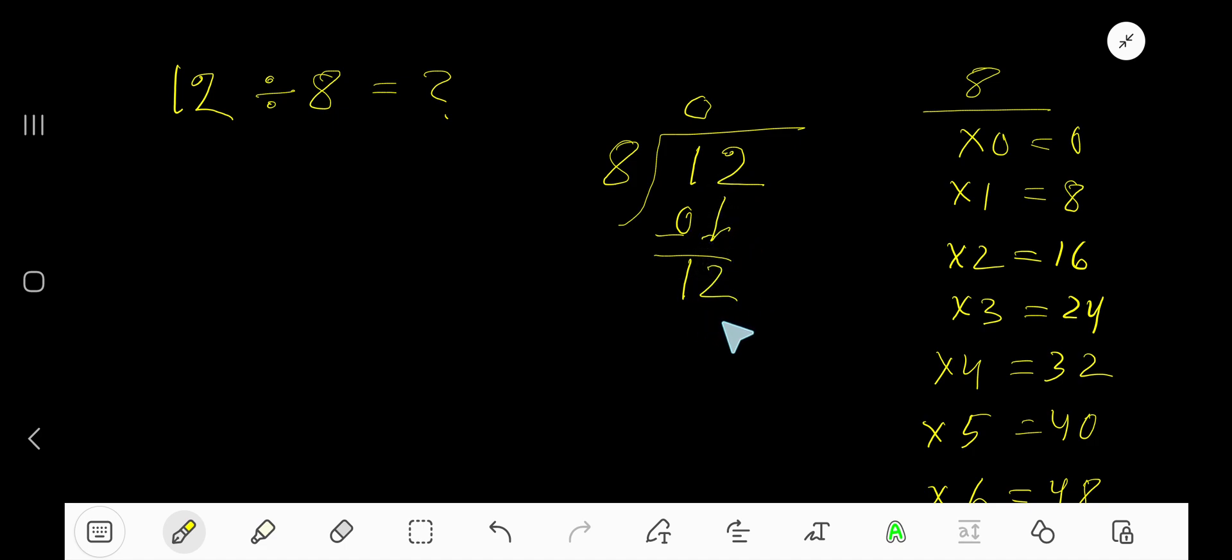8 goes into 12 how many times? 8 times 2 is 16, so 1 time. 1 times 8 is 8, subtract to get 4.